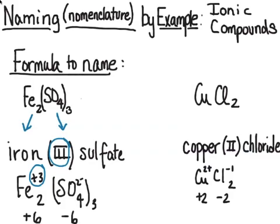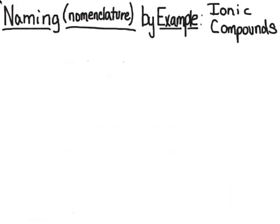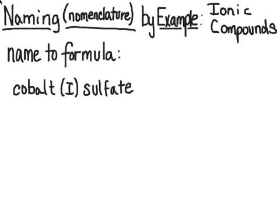We've now talked about the two types of ionic compounds: those containing metals without a change in charge, and those that can vary in charge like iron and copper. Now we're going to go in the opposite direction — from name to formula — which gets a bit trickier with compounds that contain metals with multiple charges.